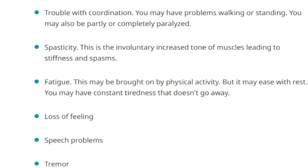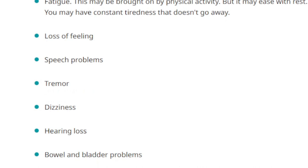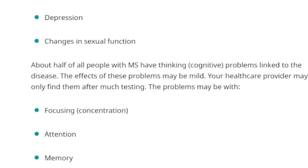Other symptoms include muscle weakness in the arms and legs, trouble with coordination — you basically have problems walking and standing, you get off-sided easily. Spasticity is the involuntary increased tone of muscles leading to stiffness or spasms. Fatigue may be brought on by physical activity but may ease with rest. There can also be consistent tiredness, loss of feeling, speech problems, dizziness, hearing loss, bladder problems, depression, changes in sexual function, and about half of all people with MS have cognitive problems affecting attention, memory, and judgment.